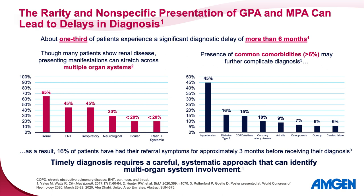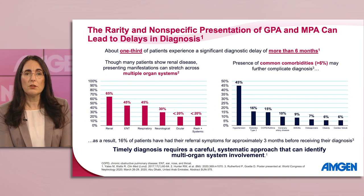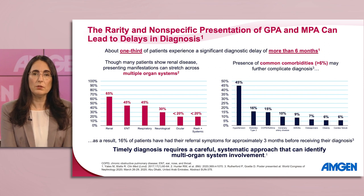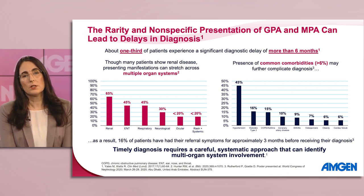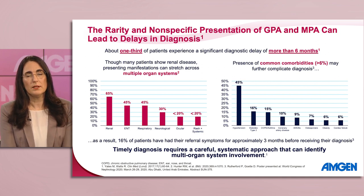About one-third of patients with GPA and MPA experience significant diagnostic delay of more than six months. Although many patients present with renal disease, remember that manifestations can stretch across multiple organ systems, and the presence of comorbidities may further complicate diagnosis. The issues discussed here help to underscore the importance of employing a careful and systematic approach to clinical assessment that can help us identify multi-organ system involvement and aid in timely diagnosis.